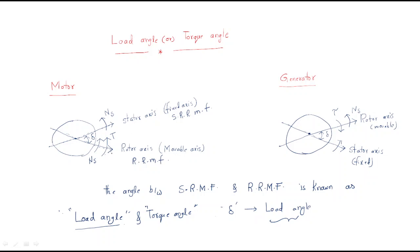The torque developed will try to coincide the stator and rotor axis — it tries to improve the speed and combine the rotor axis with the stator axis. The stator axis is the stator RMF and the rotor axis is the rotor RMF. The torque tries to bring them together.